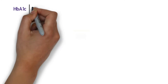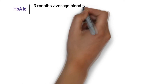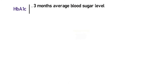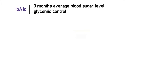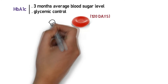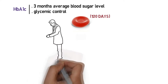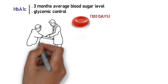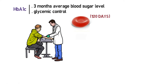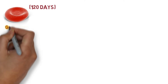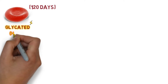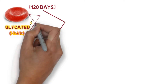Hemoglobin A1c is a marker used to determine the three-month average blood sugar level. It is also helpful to determine glycemic control over the lifespan of a red cell within 120 days, and is widely used for diagnostic testing in diabetes mellitus and assessment of glycemic control in diabetic patients.